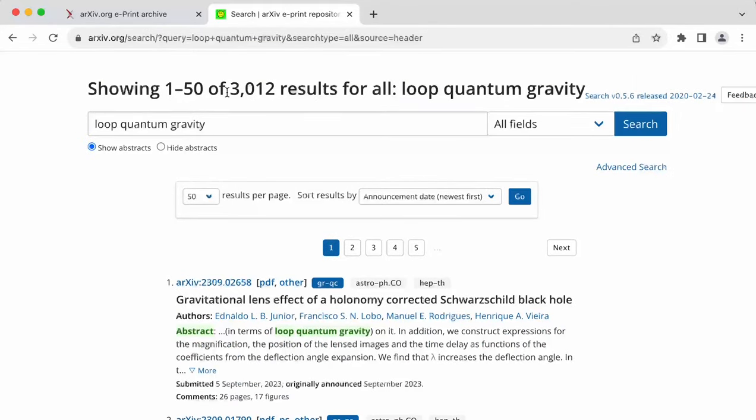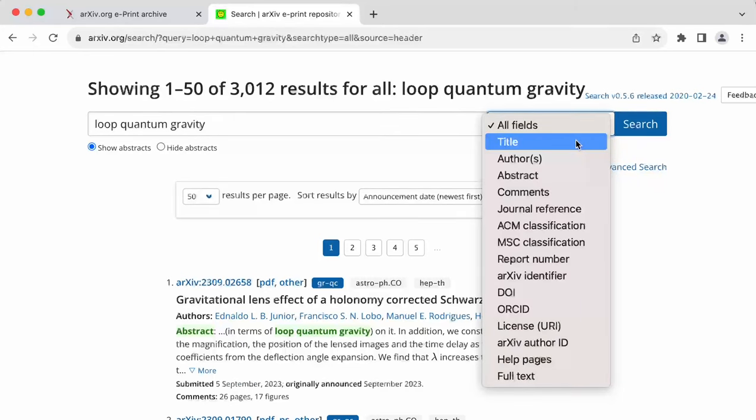So this shows you 3,012 results. And this is the result of searching in all the fields. What are the different fields? There is a title field, author, abstract, comments, and so on and so forth.